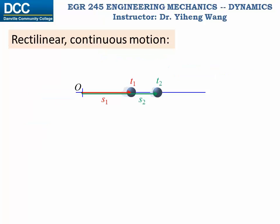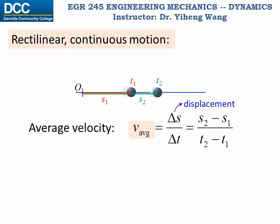From time t1 to time t2, the average velocity is defined as the change in position over the change in time, delta S, or the displacement over delta t. When the time difference, delta t approaches zero, the average velocity becomes the instantaneous velocity, defined as ds over dt, or the time derivative of position.